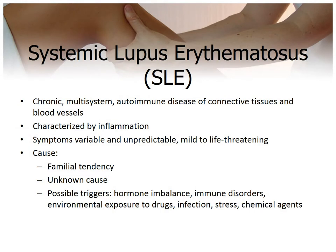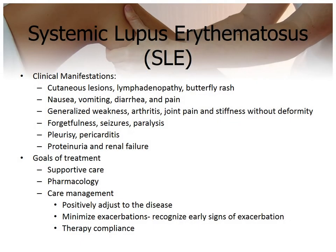Lupus is more common in girls and women ages 10–19 and is more common in African-American, Asian, and Hispanic children. For clinical manifestations, see box 48-12 on page 1568 in your textbook. Goals of treatment are aimed at supportive care, with a focus on teaching for the child and family. The family will likely have issues adjusting to chronic illness, and the child may have body image issues dealing with the rash, hair loss, steroid therapy weight gain, school and social activities, sexual activity, and even future pregnancy. Therapy compliance is very important.